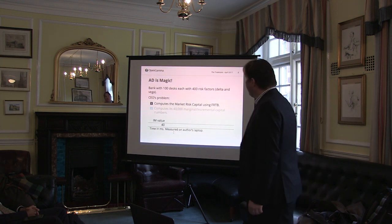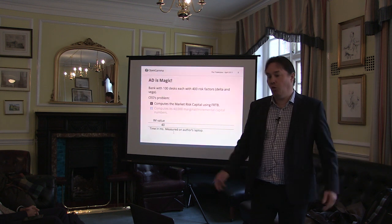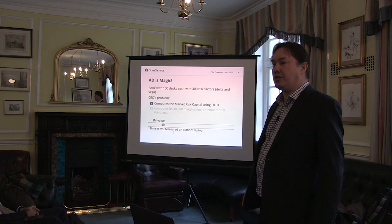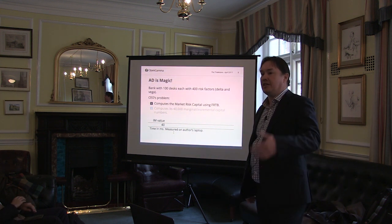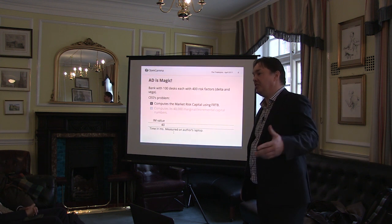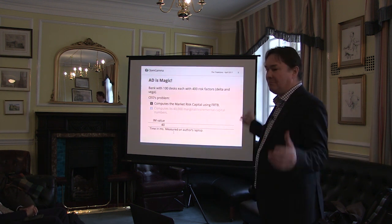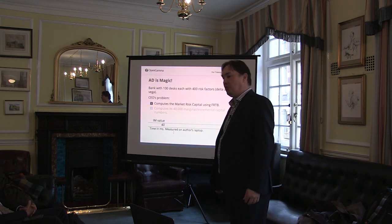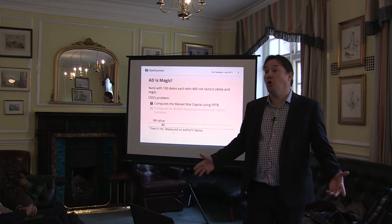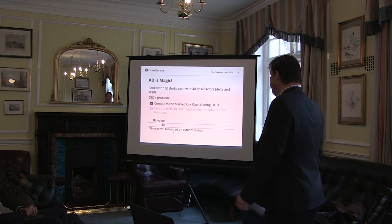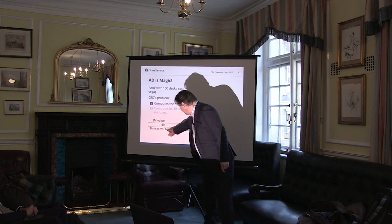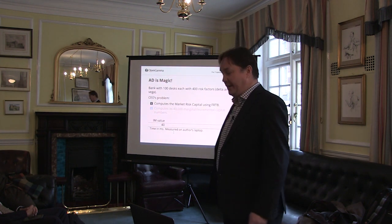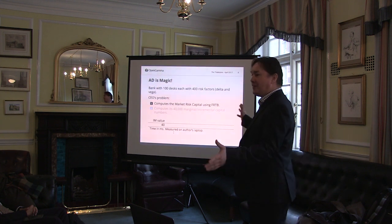In your bank you have 100 desks, or 100 traders or 100 strategies, and there are 400 risk factors for each of them. Risk factors are anything like interest rates, commodities, equities, implied volatility — just to have a starting number. You ask the CRO how long it will take to compute this number, and the answer is 40 milliseconds with the most powerful computer of the bank, which is my laptop.